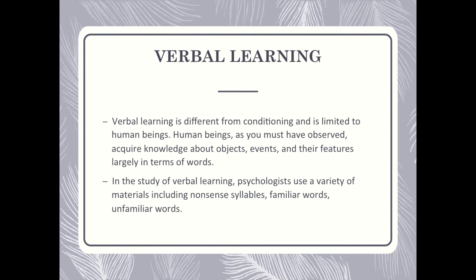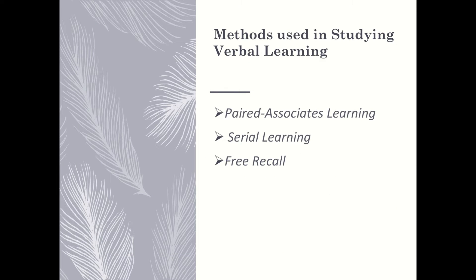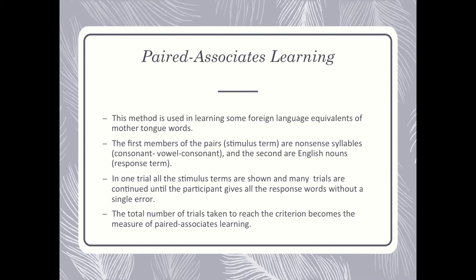Psychologists have developed a number of methods to study this kind of learning. Each method is used to investigate specific questions about the learning of verbal material. This material includes nonsense syllables, familiar words, and unfamiliar words. The three major methods used to study verbal learning are paired association, serial learning, and free recall.